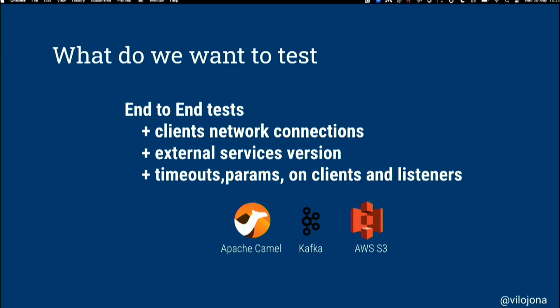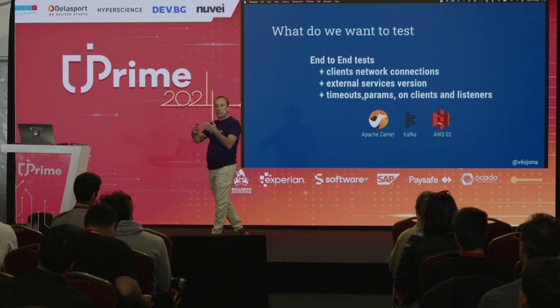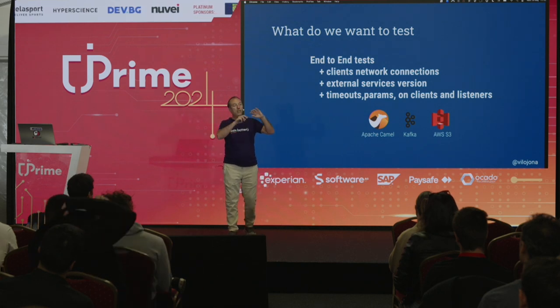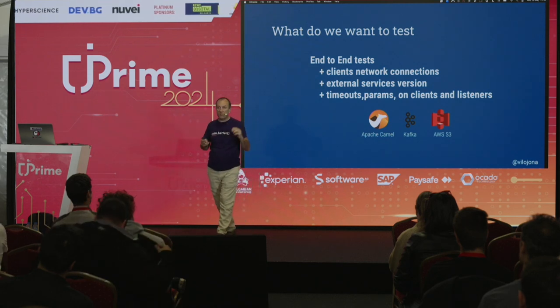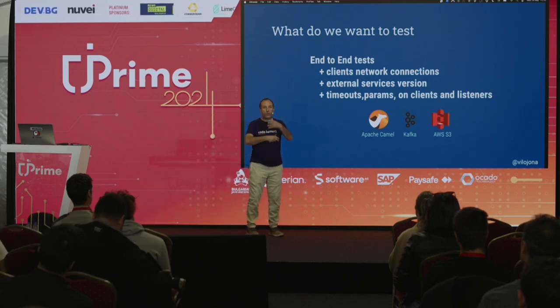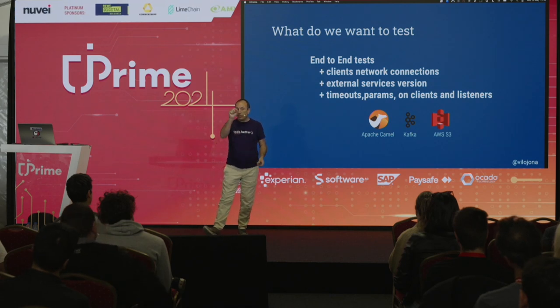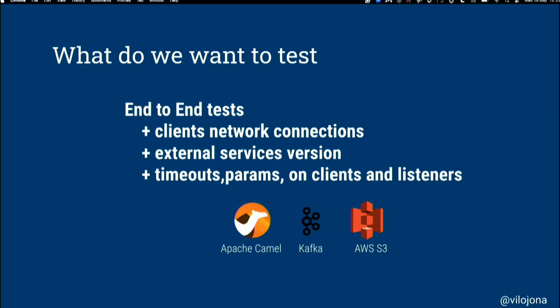With Apache Camel, you create routes. You say: from this endpoint, I will consume something, I will have a processor, and I will send it somewhere. These endpoint definitions are basically strings — you define a string specifying which is the connector and the parameters for that connector. We wanted to be sure we were not messing with all those strings. If you mock the connection with Camel, maybe you're introducing something wrong in the endpoint. So we wanted to check that the connections with Apache Camel to Kafka and S3 were correct.